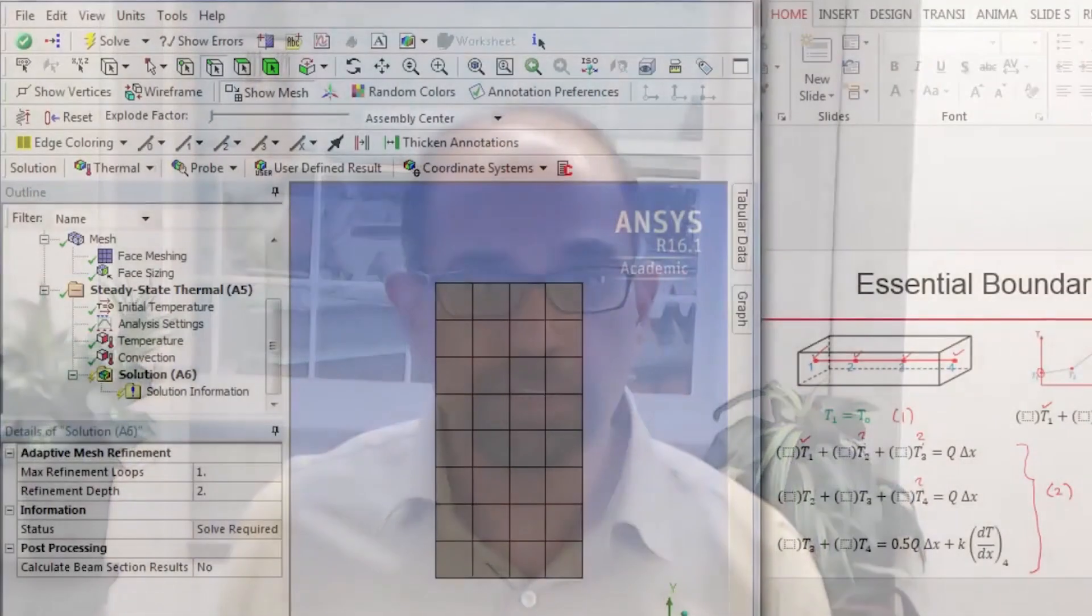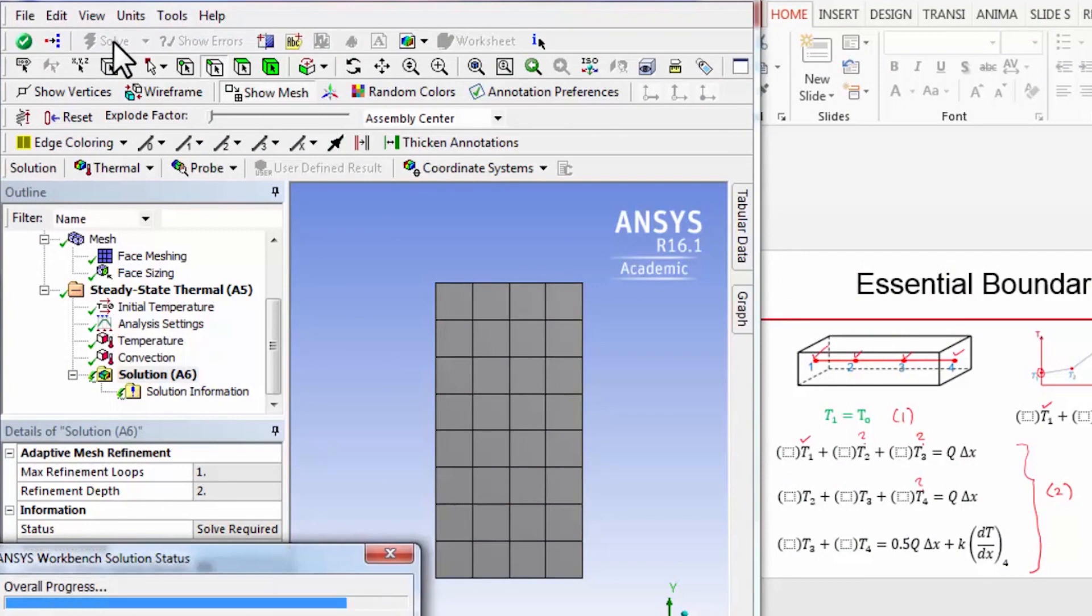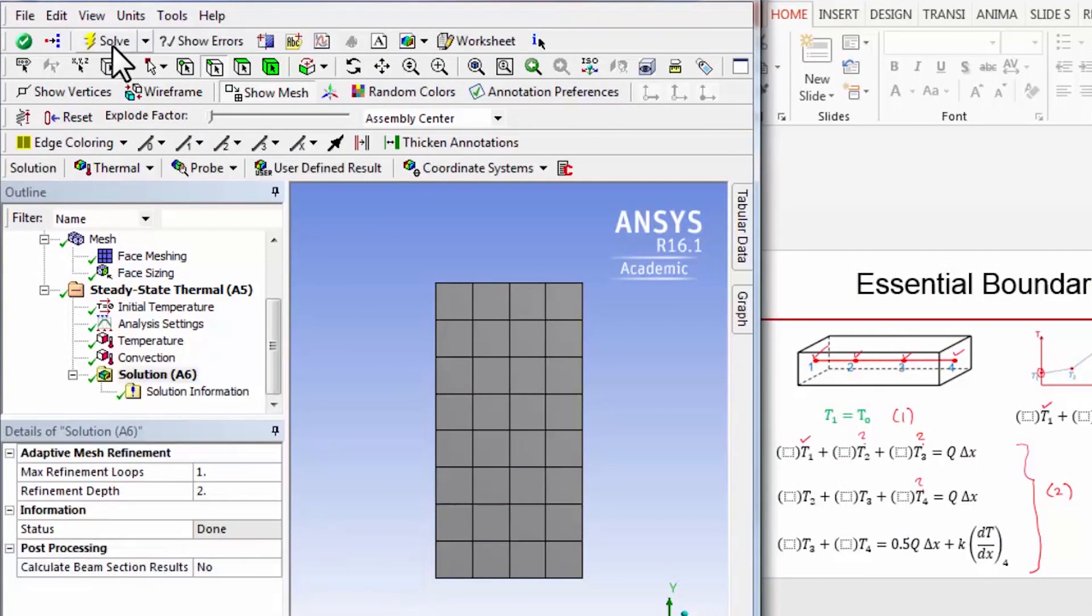Now that we have completed the definition of the mathematical model within ANSYS, let's get the solver to solve it numerically by generating the algebraic equations on the mesh that we gave it and then solving those algebraic equations. Go into mechanical and click solve. It's solving the mathematical model and it's done - the numerical solution is complete.